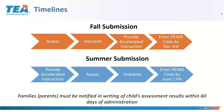Here are our timelines for the fall. You begin by doing your assessment, then interpret it, and if needed provide accelerated instruction — there may be more students needing it this year due to COVID slide. You enter the PEAMS code based on what your district decided by December 3rd. Then you provide accelerated instruction in January and February, assess again, interpret, and enter the PEAMS code by June 17th. Some districts use the same tool for their dyslexia screener in January for first grade and the end-of-year ERI code and dyslexia screener.